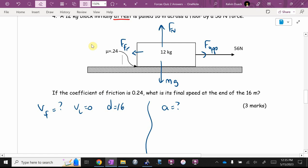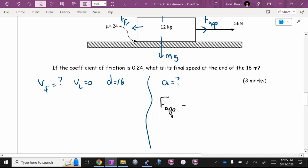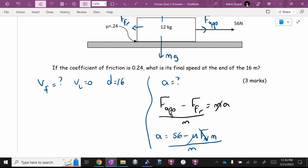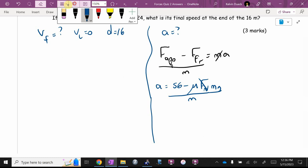So I'm going to write an equation for that. Who's winning? It's going to be F applied. Who's losing? Friction. What's that going to equal? MA. And then I'm going to apply Cooper's theorem. A is going to be 56 minus mu times the normal force all over M. I don't know the normal force. It's going to be Mg.